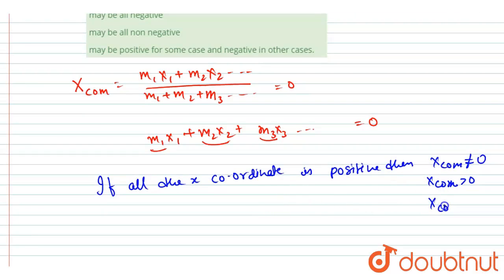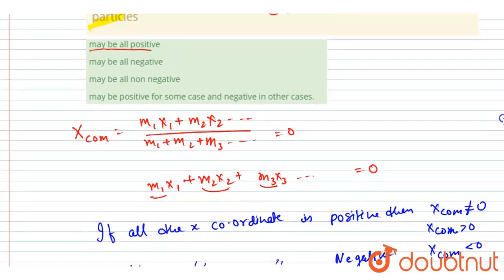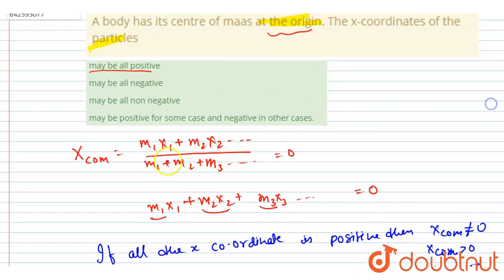So if I say all the x-coordinates are negative, right, then the center of mass will have a negative x-coordinate. And then maybe non-zero, so it may be possible that they are having x-coordinate of non-zero, right?